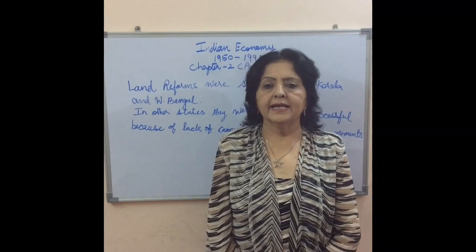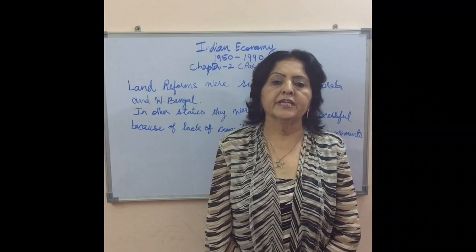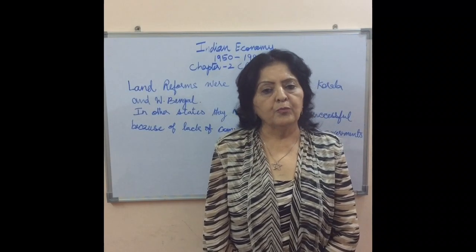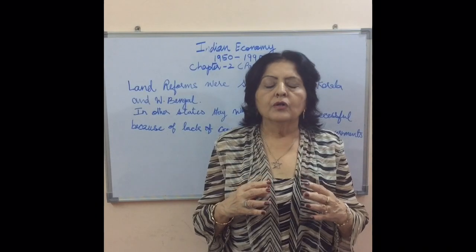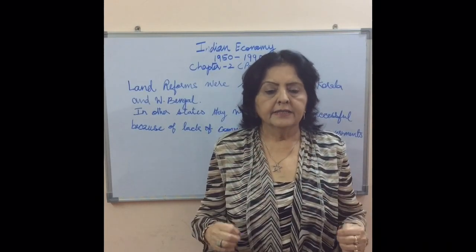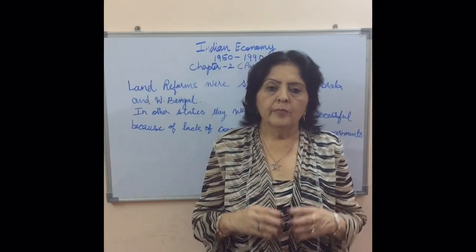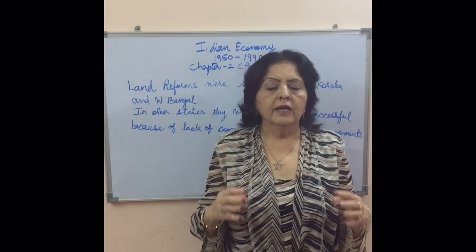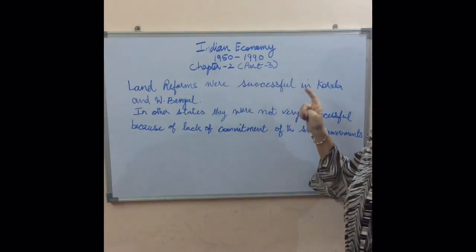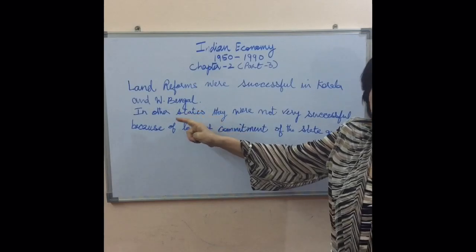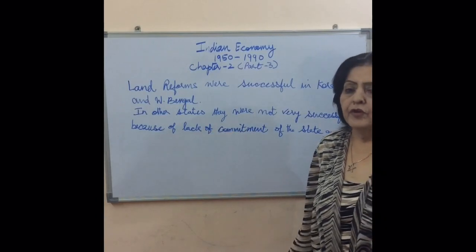Land reforms and land ceiling faced many hurdles. The zamindars were able to retain their zamindari by finding loopholes in the legislature. The land ceiling was also not executed very well — the legislation was weak and not implemented properly, so many individuals still owned large units of land. Land reforms were successful in states like Kerala and West Bengal, but in other states they were not very successful because of lack of commitment from state governments.